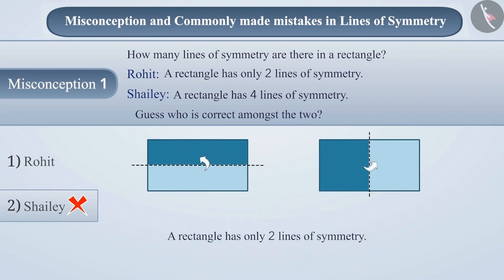Hence, a rectangle has only two lines of symmetry as guessed by Rohit. Thus, option 1 is the correct answer.